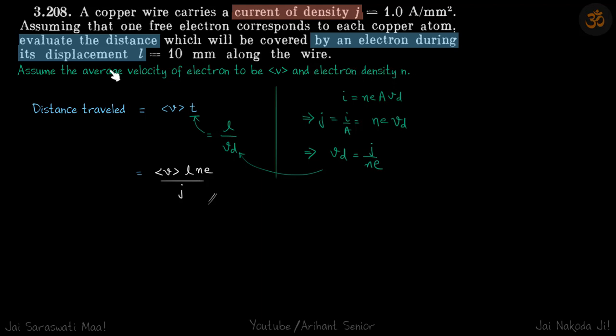Now let us do the problem. Distance travelled is average velocity times time, and to cover L distance, time will be L by VD, L by drift velocity.